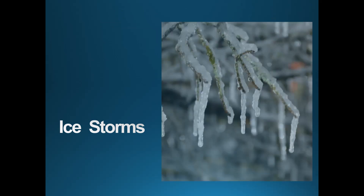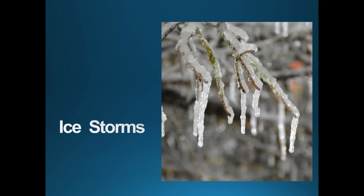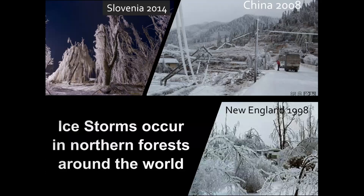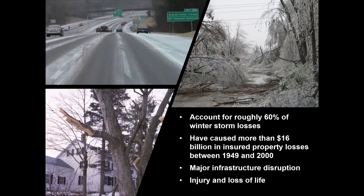Ice storms — not sure if any of you have been in a major ice storm, but they are simultaneously one of the most beautiful natural events, as well as one of the most terrifying. Ice storms occur in northern forests around the world. Here you can see images of ice storms in the US, China, and Eastern Europe. They cause a tremendous amount of damage. Here in the US, they account for roughly 60% of winter storm losses, and have caused more than $16 billion in insured property losses between 1949 and 2000 alone.